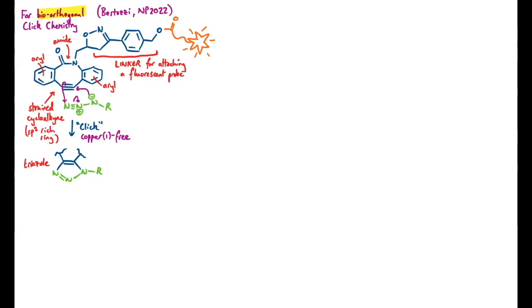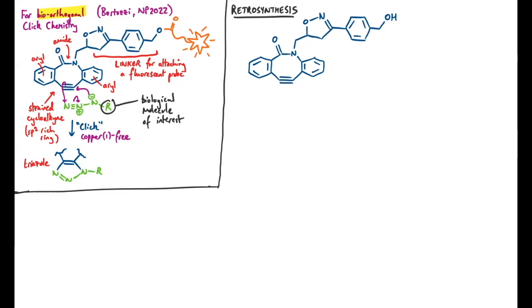So now wherever the strained alkyne goes, the fluorescent tag will go with it. If the alkyne finds an azide, and does the really quick click reaction, the fluorescent tag will get permanently fixed to the biological molecule that we're trying to investigate, which I've abbreviated quite aggressively as an R group here. Now that's why we'd want this molecule, but how can we make it?